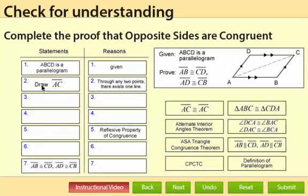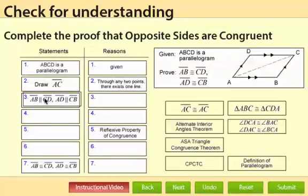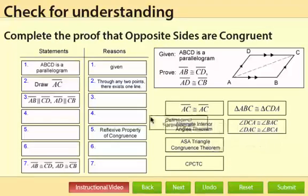So our first goal is going to be to prove that these two triangles are congruent to each other. Now the statement that goes after draw segment AC is going to be about the parallel segments. Because we have a parallelogram, we know that segments AB and CD are parallel as are segments AD and CB. And the reasoning is definition of parallelogram.